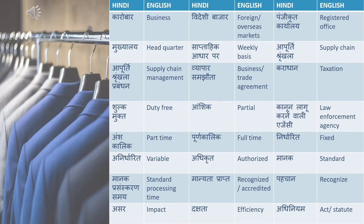The next word is karobar — like we saw before, it means business. Videshi bazaar means foreign or overseas markets. Panjikrit karayalay means registered office. Aapke company ki panjikrit karayalay kahan hai — where is the registered office of your company. Mukhyalay means headquarter. Hamaare company ka mukhyalay yahan hai — that is mukhyalay is headquarter.